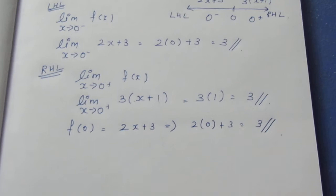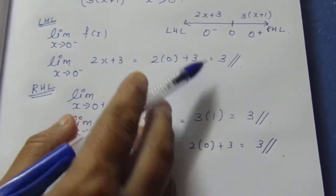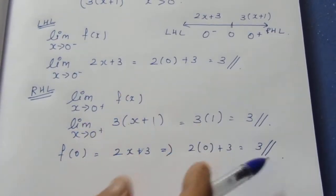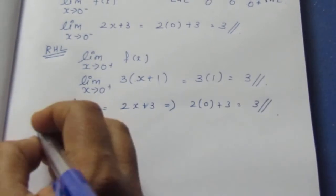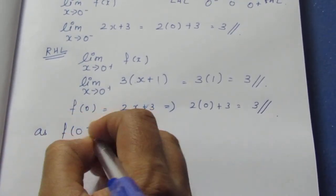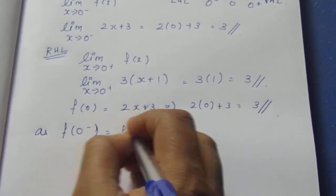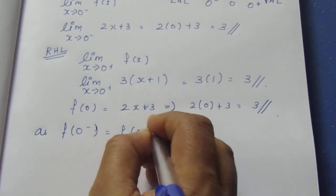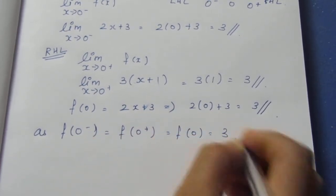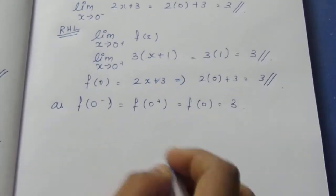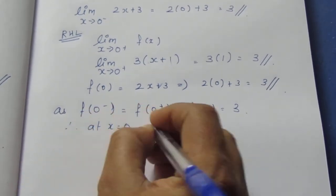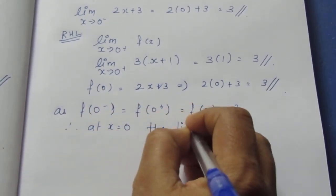We now have all three conditions. The left-hand limit equals 3, the right-hand limit equals 3, and f(0) equals 3. Since f(0 minus) equals f(0 plus) equals f(0) equals 3, therefore at x equals 0, the limit exists and equals 3.